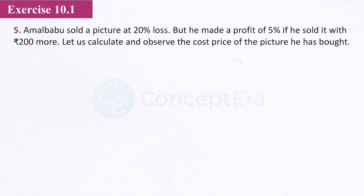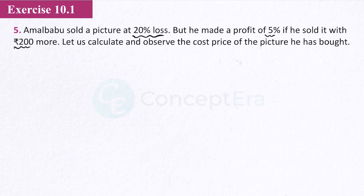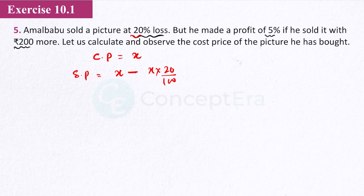Question number 5: a picture was sold at 20% loss, but he made a profit of 5% if he sold it for 200 more. We need to find the cost price. We assume cost price is x. In the first case, selling price with 20% loss: selling price equals x minus 20% of x, which comes to 80x by 100.